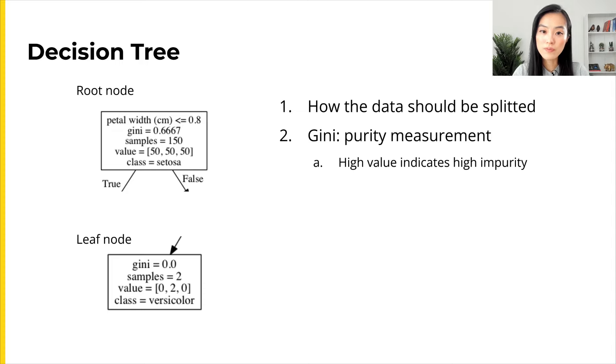The second line is a Gini index, which is a purity measurement of the labels in the node. Higher Gini index means the labels are not pure, which means that we have a mix of different labels. You can see the root node has a high Gini index. On the other hand, in the leaf node where it contains only one type of label, the Gini index is zero.